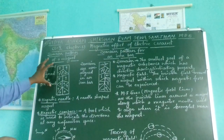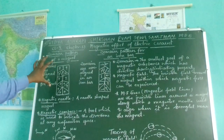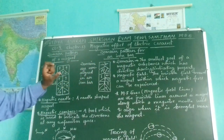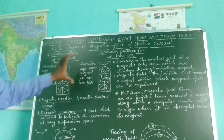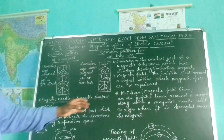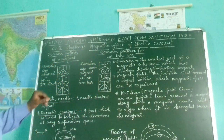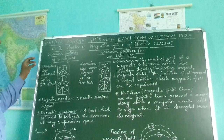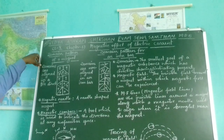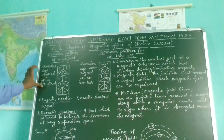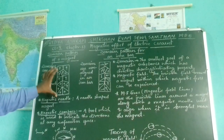On the basis of the domain, we can differentiate between a bar magnet and an iron bar. In a magnet, the domains are aligned in a fixed direction, whereas in an iron bar they are not aligned.